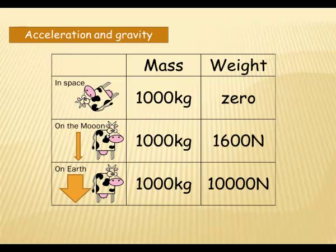Now if we put our cow on the Moon, if we take our cow to the Moon, the Moon has a gravitational constant of 1.6 Newtons per kilogram. So her mass doesn't change. Multiply this by 1.6, we get her weight, which is 1,600 Newtons.